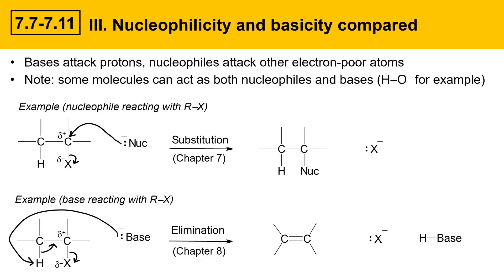One thing that can get complicated is that some molecules can act as both nucleophiles and bases. For example, hydroxide can do this. OH⁻ can act as a nucleophile, attacking the carbon and displacing halogen to give an alcohol substitution product. But hydroxide can also act as a base — it could deprotonate the adjacent proton, those electrons going to make a carbon-carbon double bond and the leaving group leaving, giving water as a co-product.